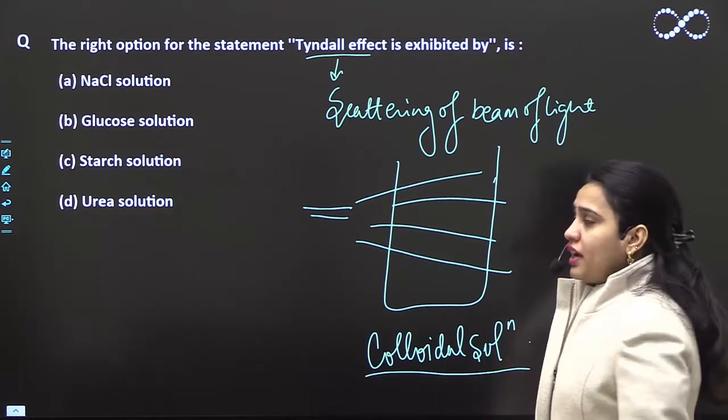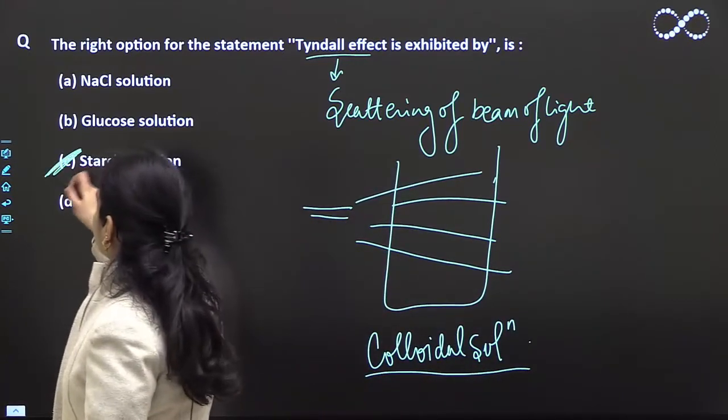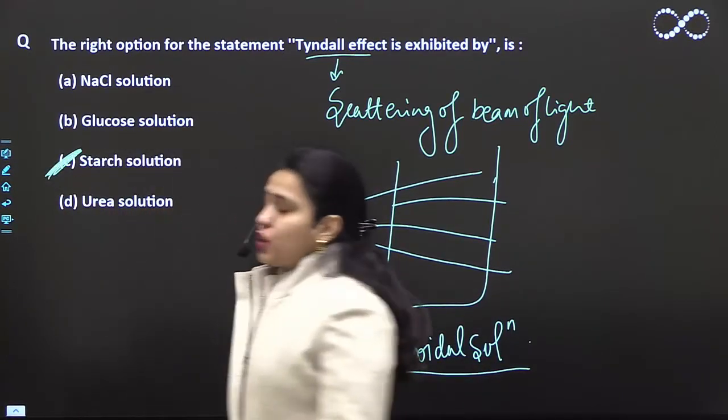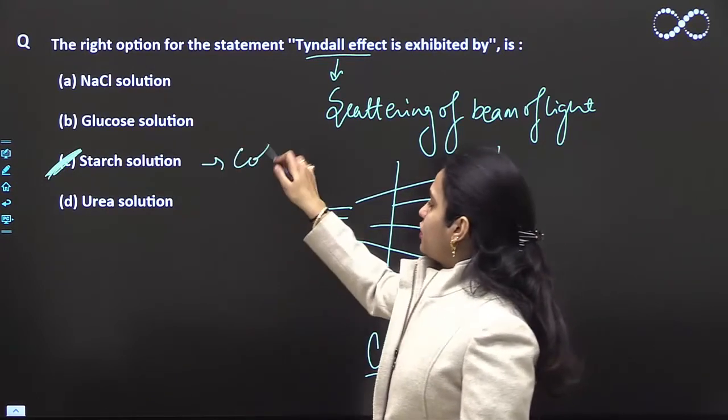Glucose on the other hand is also a true solution. Starch solution is slightly blurry, it forms the colloidal solution. So starch solution will show the Tyndall effect. It is a colloidal solution.